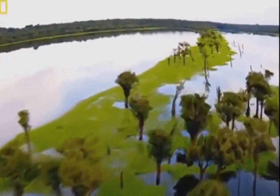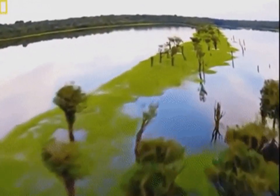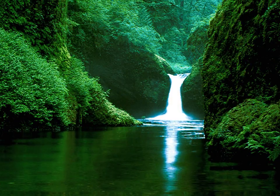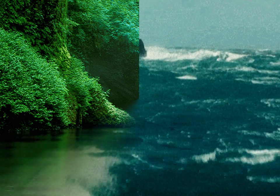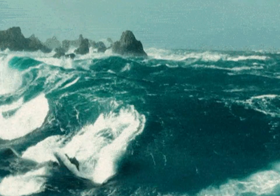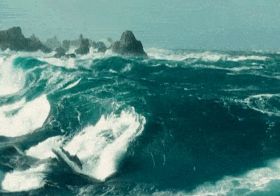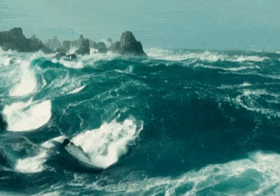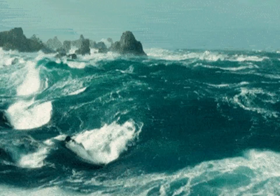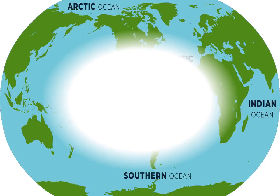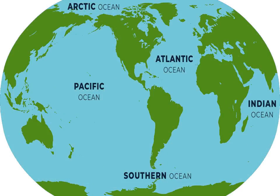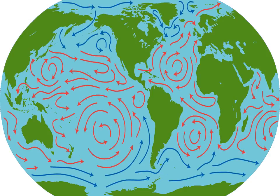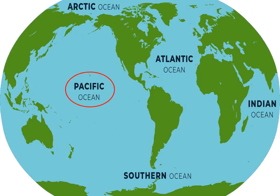The hydrosphere includes all the water bodies of the earth such as oceans, seas, lakes, ponds, rivers and streams. Oceans are huge bodies of salt water that cover almost two-thirds of earth's surface. They constitute almost all the water on the earth. There are five oceans on the earth. They are the Pacific Ocean, the Atlantic Ocean, the Indian Ocean, the Arctic Ocean and the Southern Ocean.